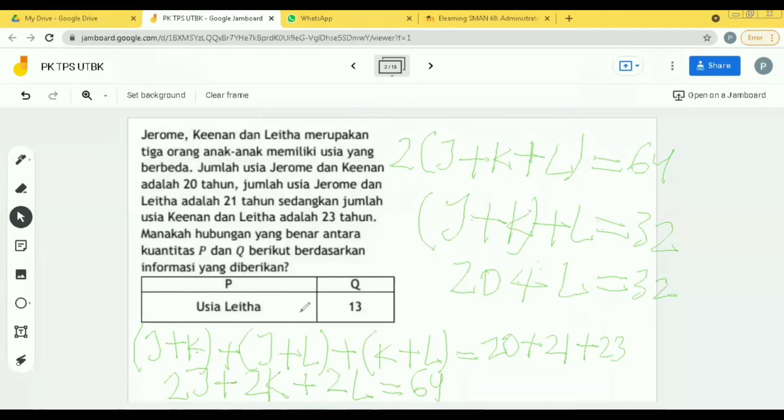Kalau si P-nya 12, si Q-nya 13, maka opsi yang benar apa? A tadi P lebih besar dari Q, B P sama dengan Q. Sampai sini ada yang mau tanya enggak? Pak, ada yang mau tanya dulu? Silahkan. Pak, saya mau tanya dong Pak. Ya, silahkan.